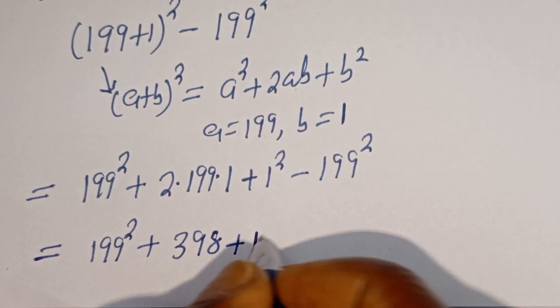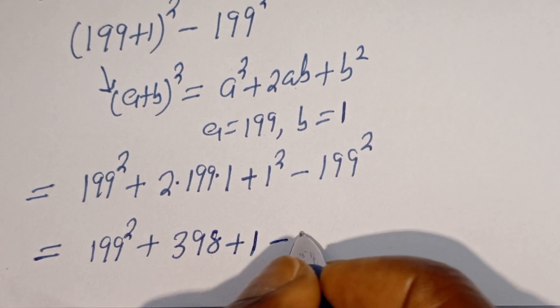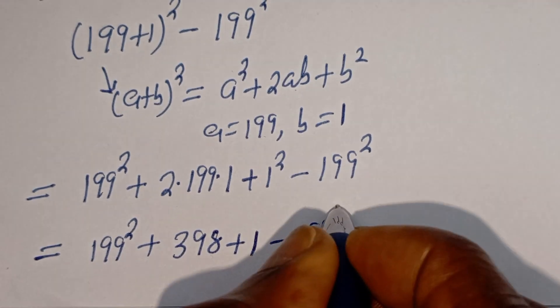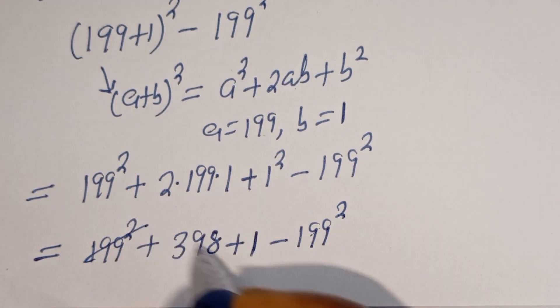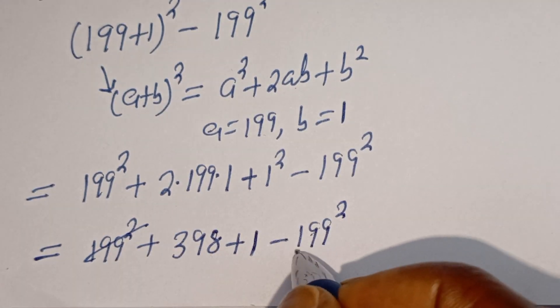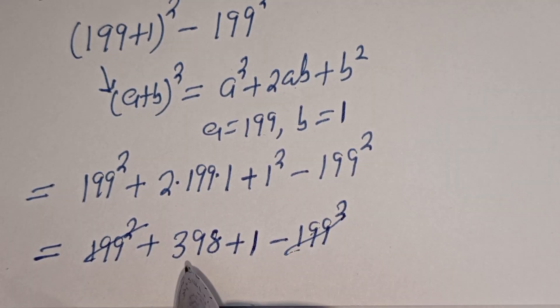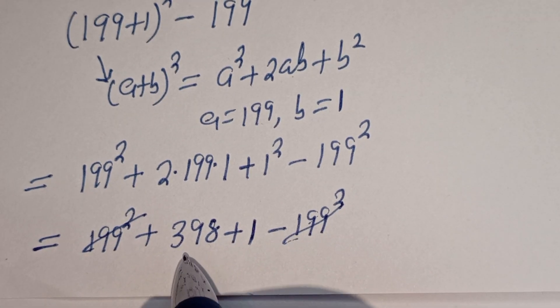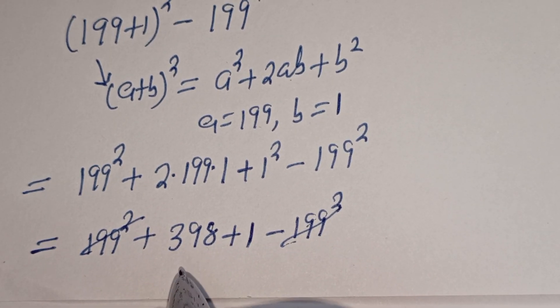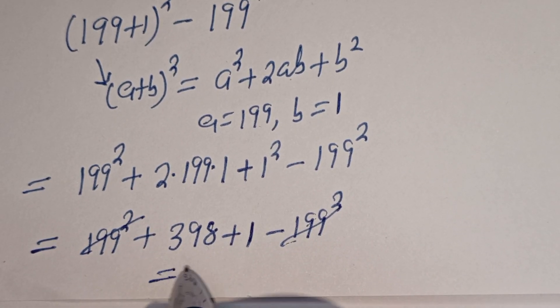That is 398 plus 1 minus 199 squared. The 199 squared terms cancel. Then 398 plus 1 is equal to 399.